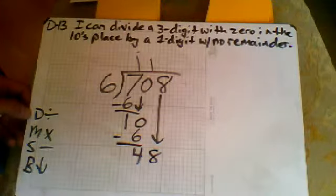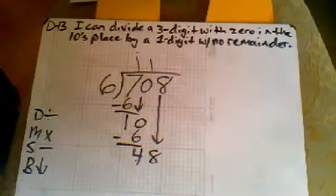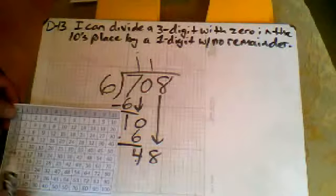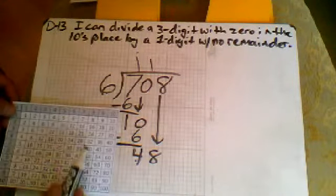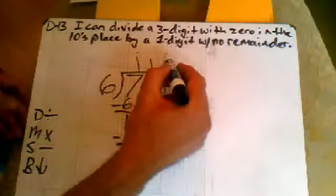Back to division. Six goes into forty-eight. I'm going to pull up my multiplication table there. Six goes into forty-eight, oh evenly, eight times. I'm going to put my eight up here.